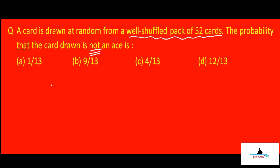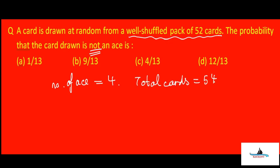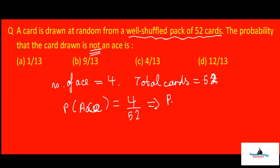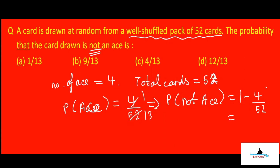How many aces are there in a pack of 52 cards? The number of aces equals four, and total cards are 52. So probability of getting an ace is four upon 52. Probability of not getting an ace equals one minus four upon 52. Simplifying four upon 52 to one upon 13, we get one minus one upon 13, which is 12 upon 13. The answer is option D.